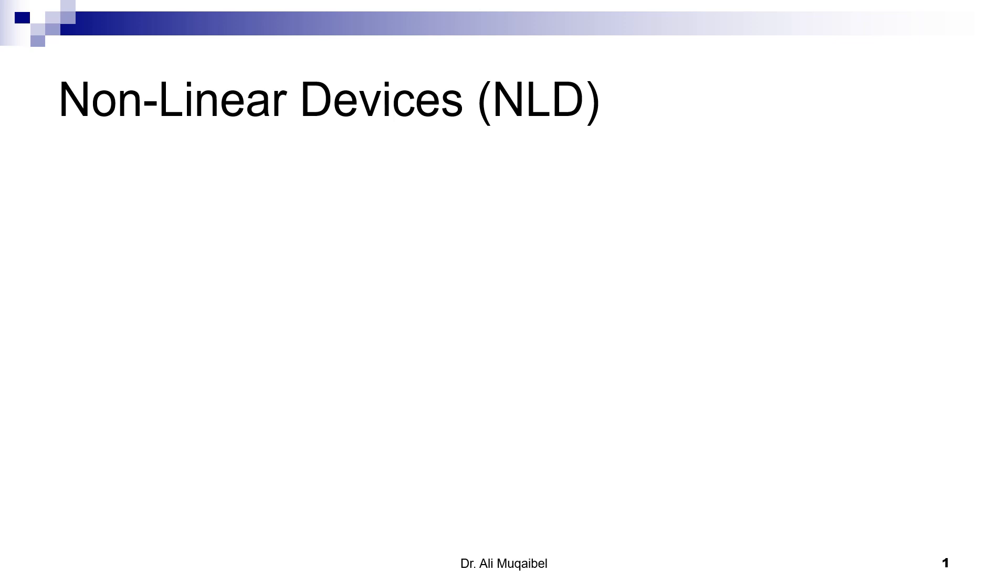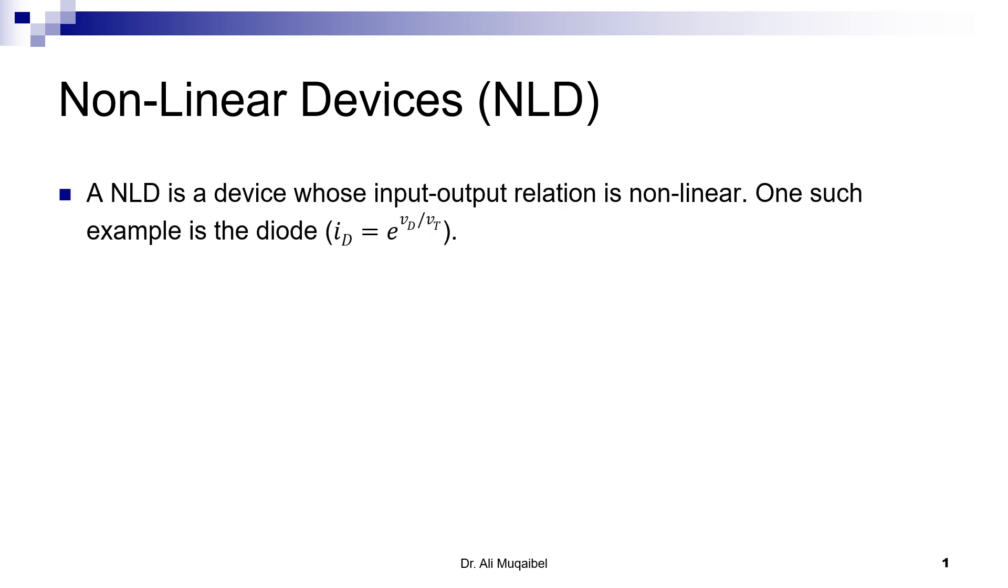One smart way of doing it is to use non-linear devices (NLD). Remember, we have linear devices like resistance, inductance, and capacitors. We call them linear because the relation between voltage and current is linear. However, for a non-linear device like the diode, the input-output relation is non-linear. For example, for a diode, the current is related to the voltage using an exponential format, which is non-linear. Recall that